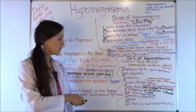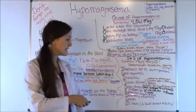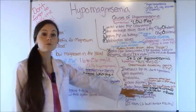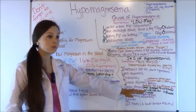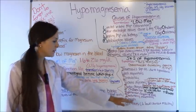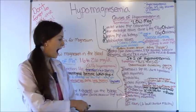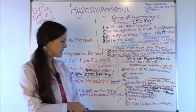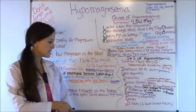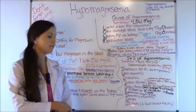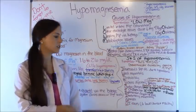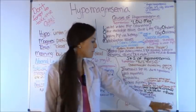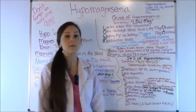H is for hypertension and hyperreflexia — remember that magnesium regulates blood pressure, so the patient is going to have high blood pressure. I is for involuntary movements. N is for nausea. And G is for GI issues — they'll have decreased bowel sounds and reduced mobility of the bowels.